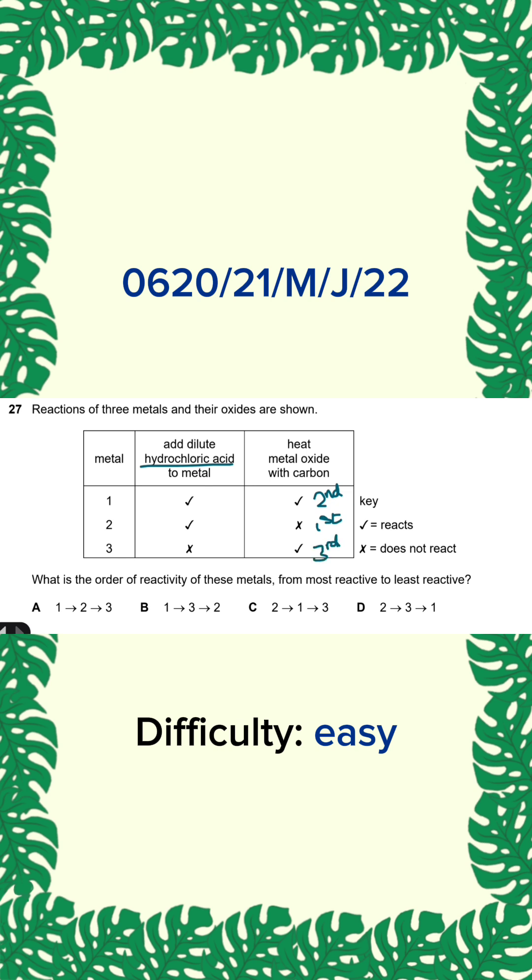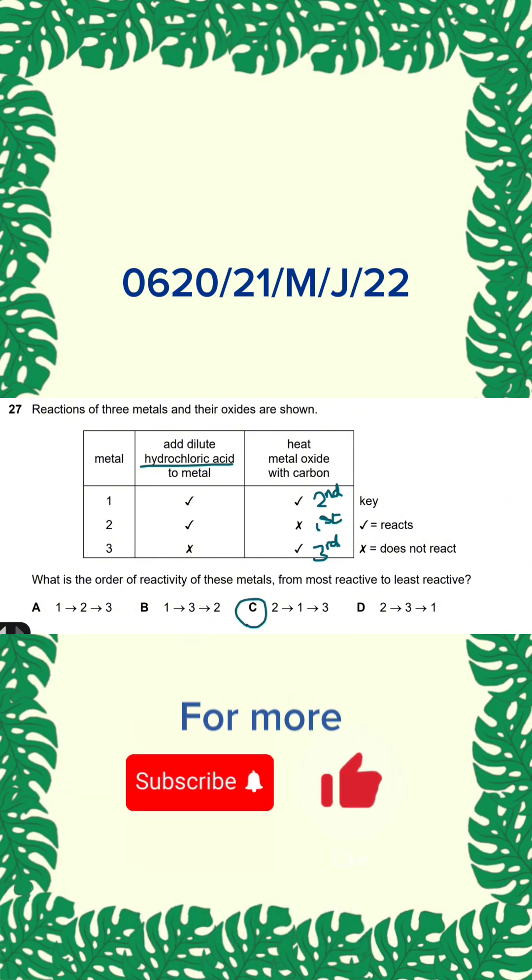So the order should be from most to least. So it should go from two, one, and then three. Which is option C.